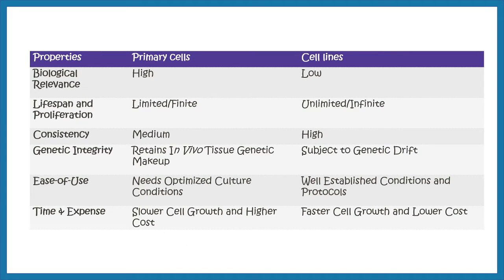Let's compare properties of primary cells versus cell lines. Primary cells have very high biological relevance compared to cell lines. Regarding lifespan, primary cells have a limited to finite lifespan, whereas cell lines are generally infinite or unlimited. Primary cell cultures recapitulate tissue-like organization far more than cell lines.